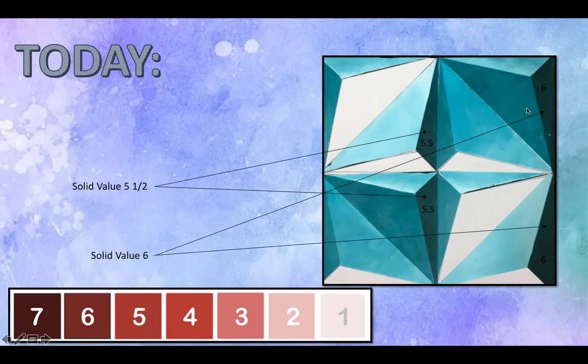So as you can see, here was my value 5 before. Here's my 5 1/2. Here's my 6. You should be able to tell the difference between all three.